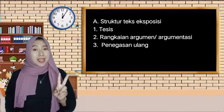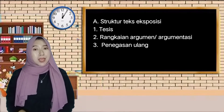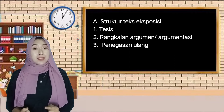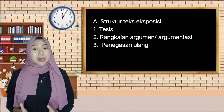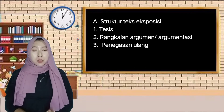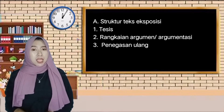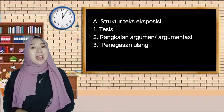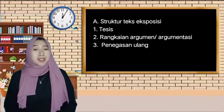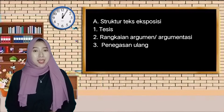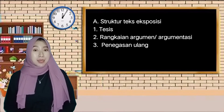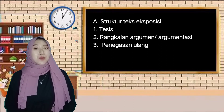Bagian kedua dalam teks eksposisi adalah rangkaian argumen atau argumentasi. Isinya mengenai pemaparan dari fakta atau informasi yang logis, hasil temuan, fakta sebenarnya di lapangan, hingga pendapat-pendapat dari para ahli. Jadi tidak heran jika dalam membaca teks eksposisi, pada bagian argumen banyak ditemukan pendapat dari para ahli. Bagian yang terakhir adalah penegasan ulang, yang berisi penegasan kembali mengenai gambaran masalah dan pendapat-pendapat yang telah dikemukakan, sekaligus penutup serta simpulan dari teks eksposisi yang ditulis.